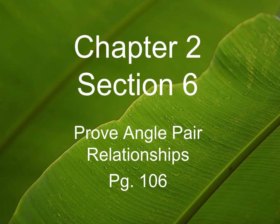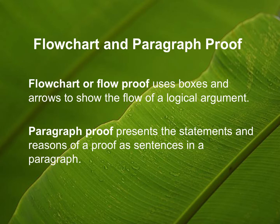Today we're going to learn how to prove angle pair relationships. Just like I said yesterday, there are other forms of proofs. We will not be writing a flowchart proof or a paragraph proof, but I want you to know that they exist. Just in case you ever see this on a standardized test, know that a flowchart proof uses boxes and arrows to show the flow of the logical argument. A paragraph proof presents the statements and reasons in paragraph form.